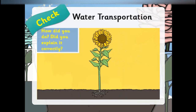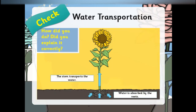Did you explain it correctly? Let's check it. When we water a plant, water is absorbed by the roots. Then, the stem transports the water to the leaves. In the end, water evaporates from the leaves.